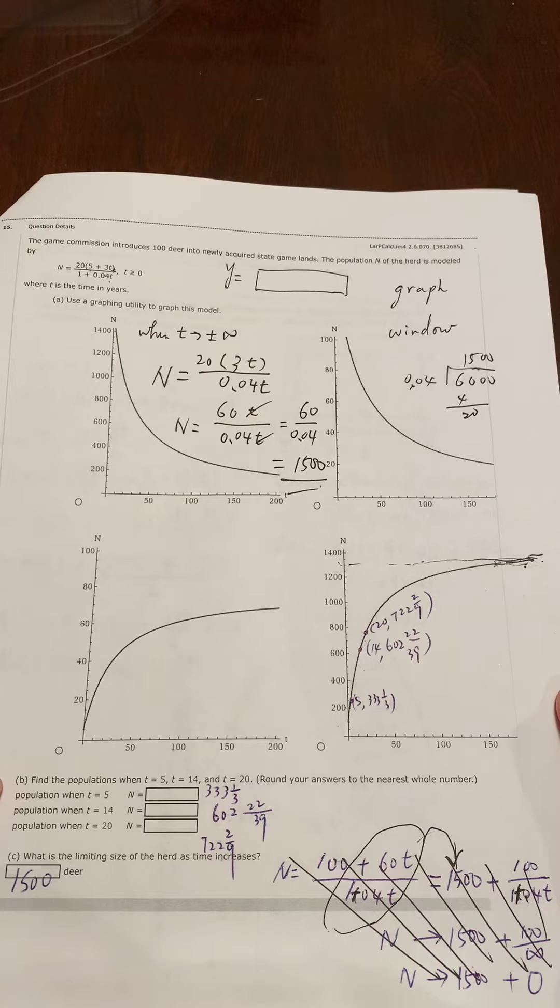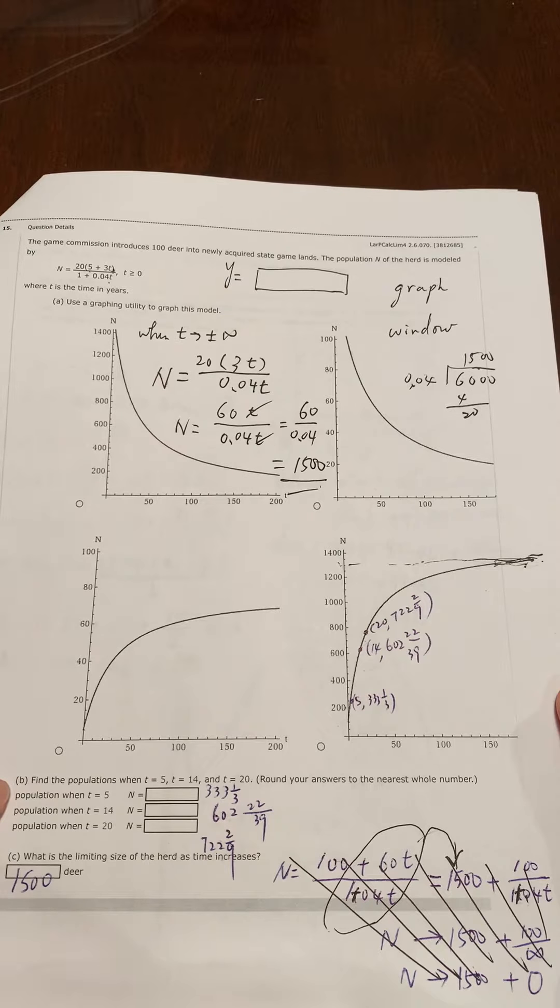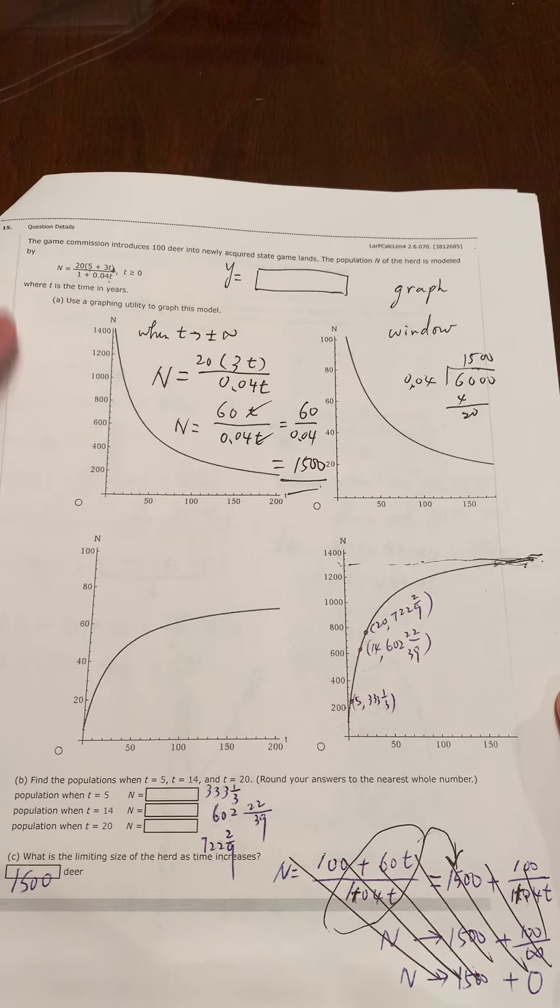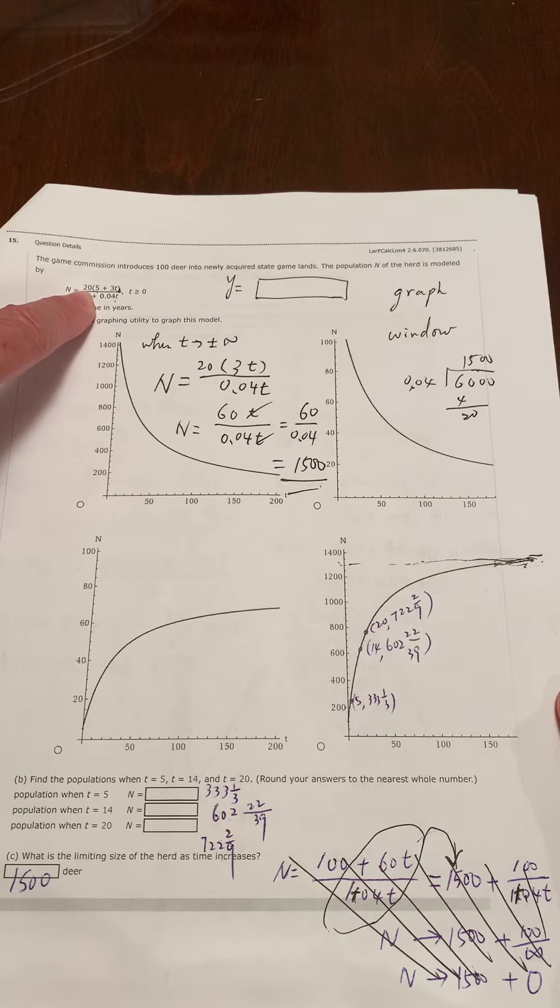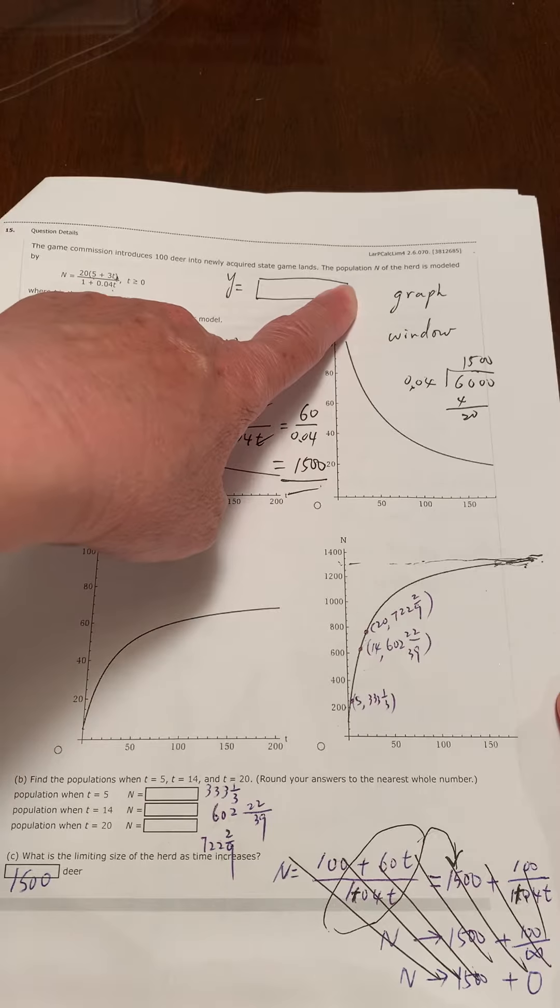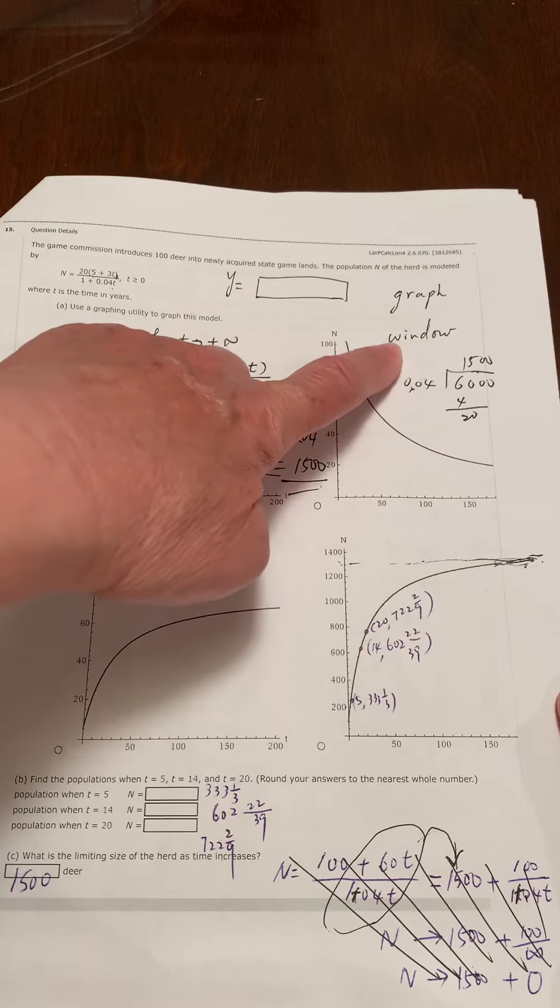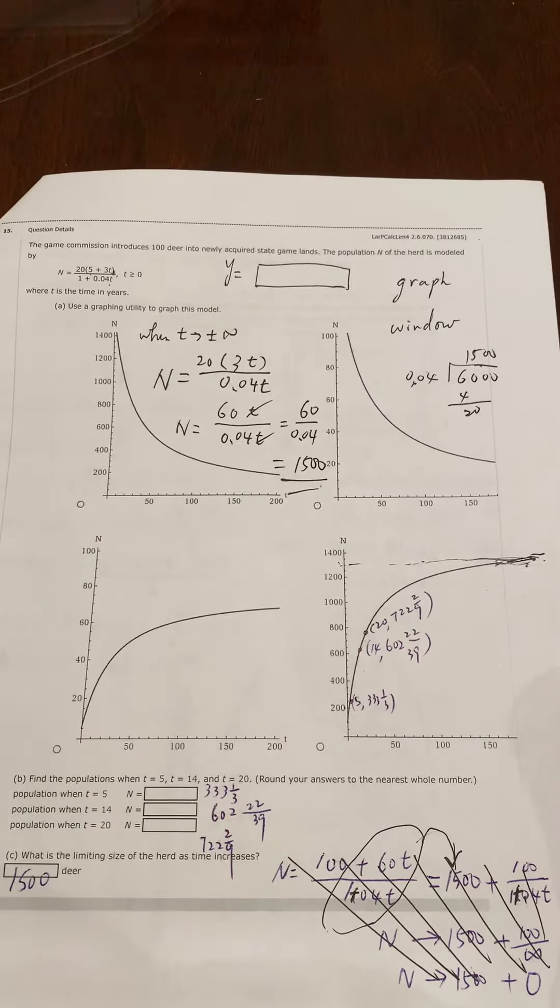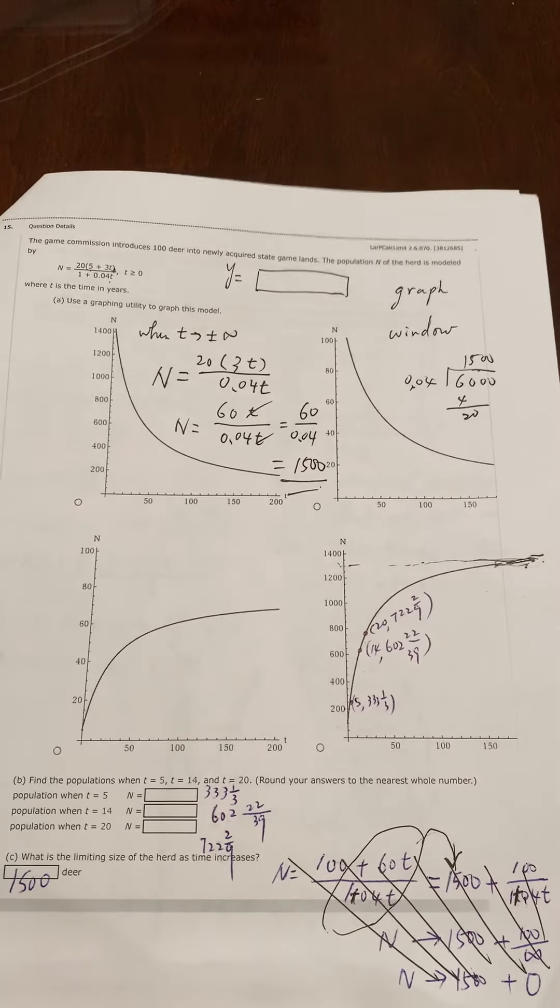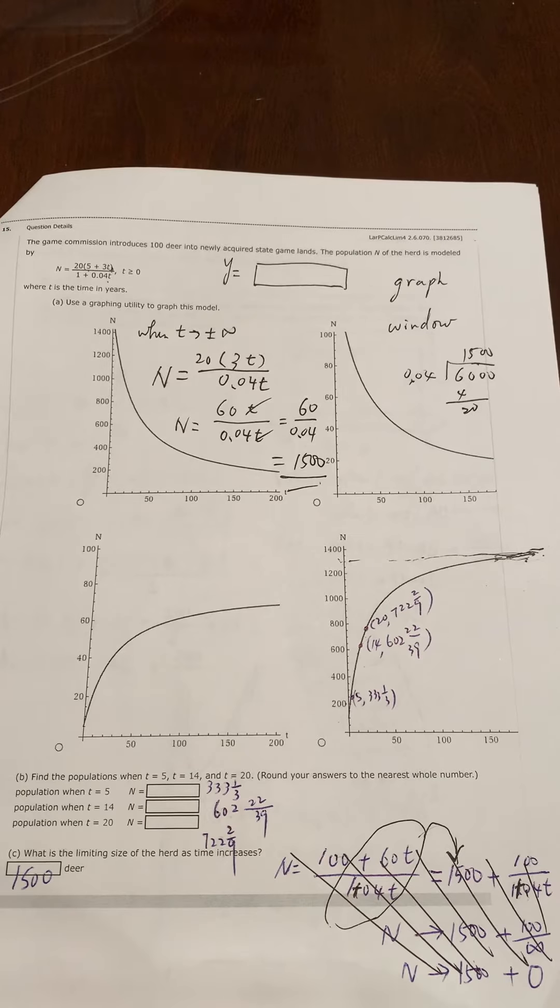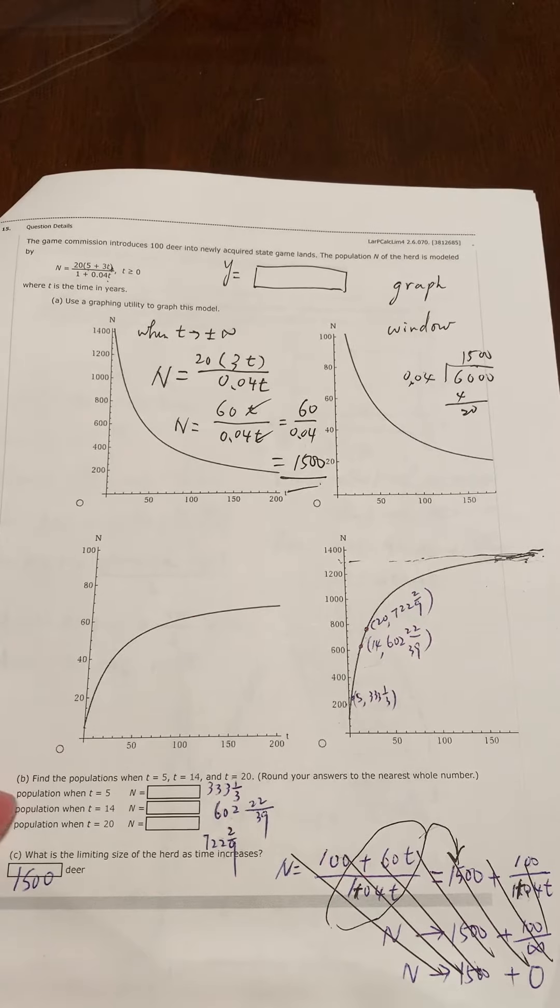They give you a function and then ask you which graph matches the function. They kind of give you a hint. If you use a graphing calculator, you just enter y equals and graph it. Make sure you set your window correctly and you may find the right function.